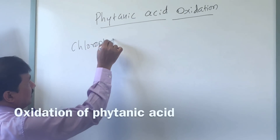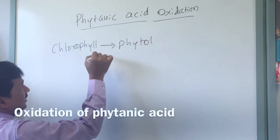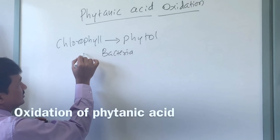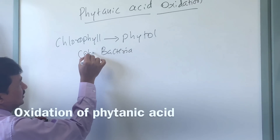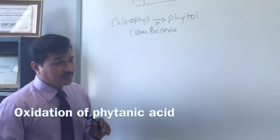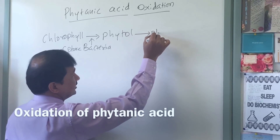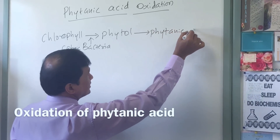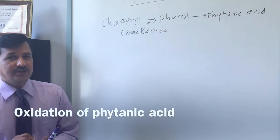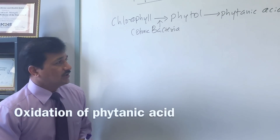Chlorophyll is converted to phytol by intestinal bacteria, especially the colonic bacteria, which ferment this and convert it into phytol. The phytol is absorbed and is converted to phytanic acid. That is how phytanic acid ends up in our body — chlorophyll to phytol, phytol to phytanic acid.